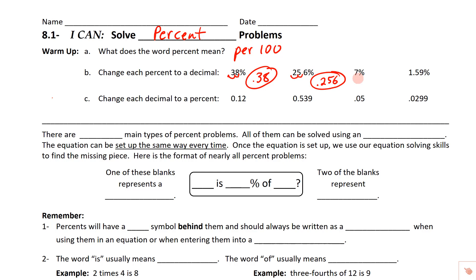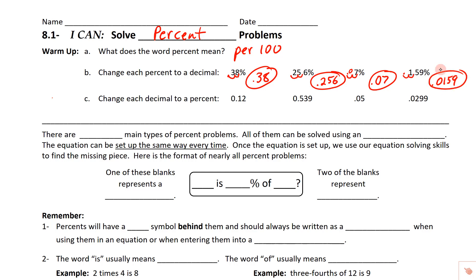It gets a little interesting here. A lot of people just say, oh, I'm going to move it over once and it's 0.7 — but it's not. We need to move it two places and fill in with a zero, so 7% is 0.07 as a decimal. And for 1.59%, we move one, two, putting the decimal right there, so this is 0.0159 as a decimal.